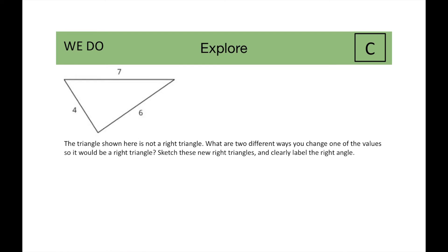For the we do, the triangle shown here is not a right triangle. What are two different ways you can change one of the values so it would be a right triangle? Sketch these new triangles and clearly label the right angle.